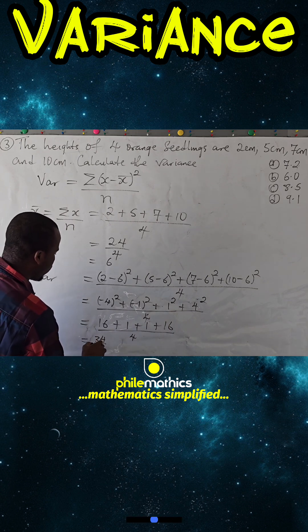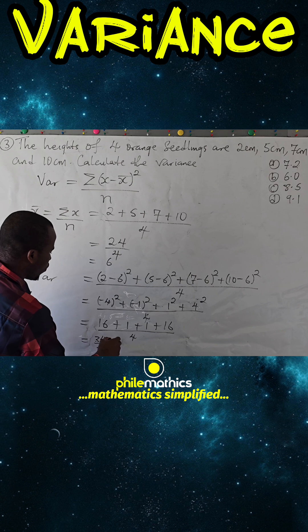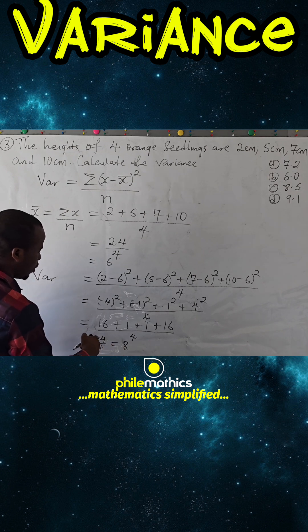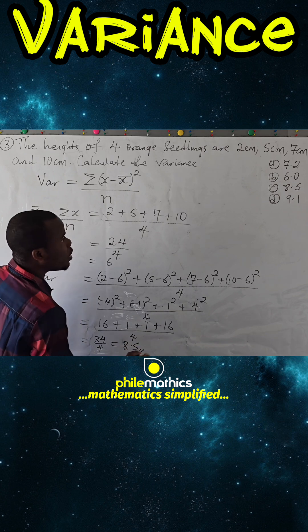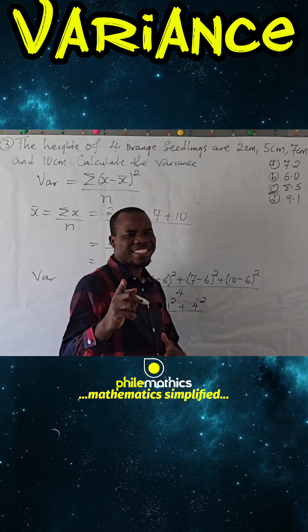We have 34 over 4. 34 divided by 4 is 8 remainder 2, then 20 divided by 4 is 5, so the answer is 8.5. The answer is C. Thank you for watching.